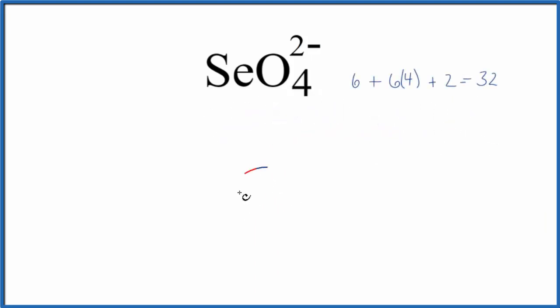So we'll put Se in the center of our Lewis structure. That's the least electronegative. Then we'll put the oxygens around the outside.